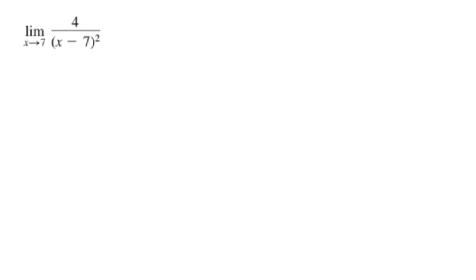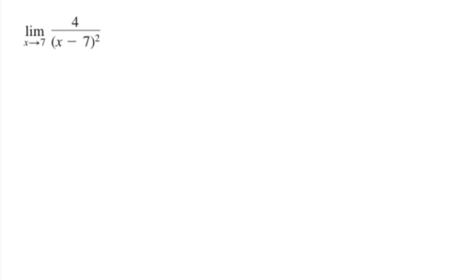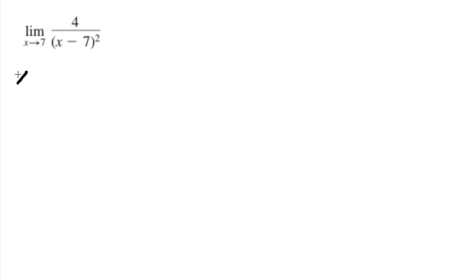For our last problem, the limit is as x approaches 7. Plugging in gives 7 minus 7 equals 0 in the denominator, which is undefined. We cannot use conjugate multiplication because there is no square root. We cannot factor for this case because x is not approaching infinity. We also cannot divide by the highest power.